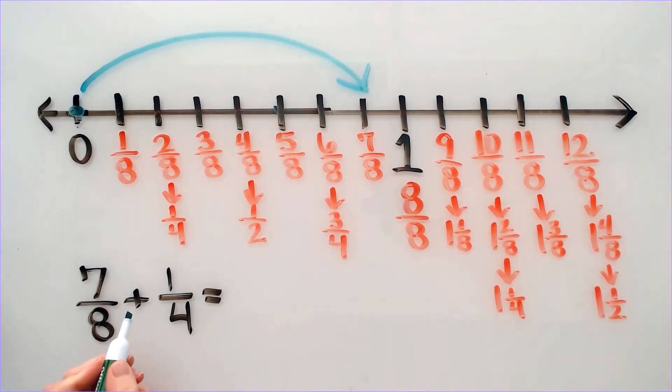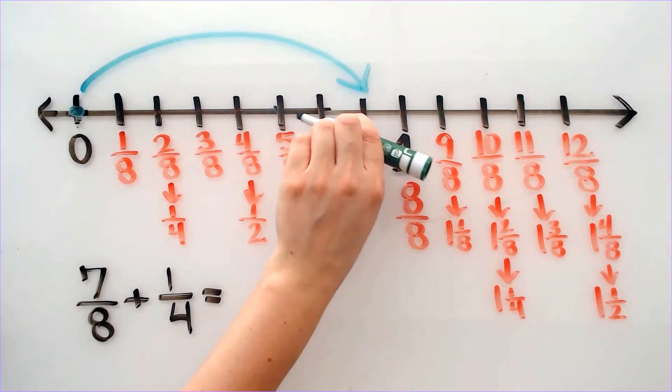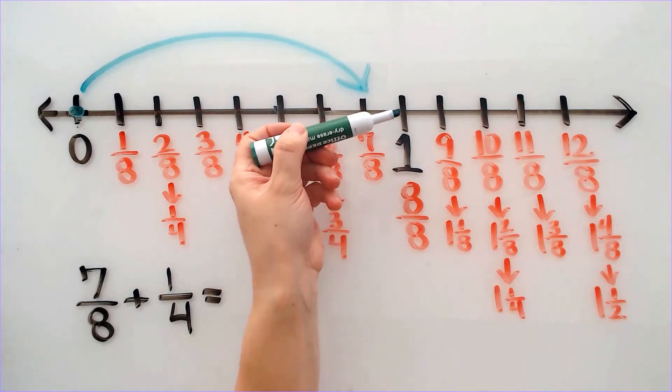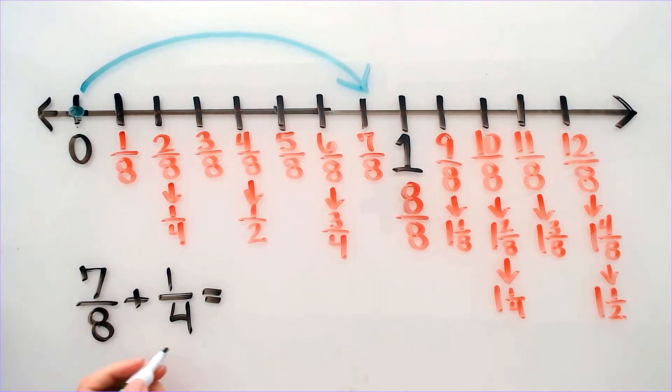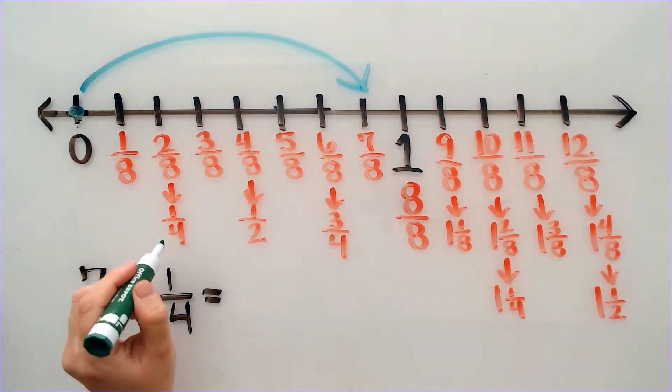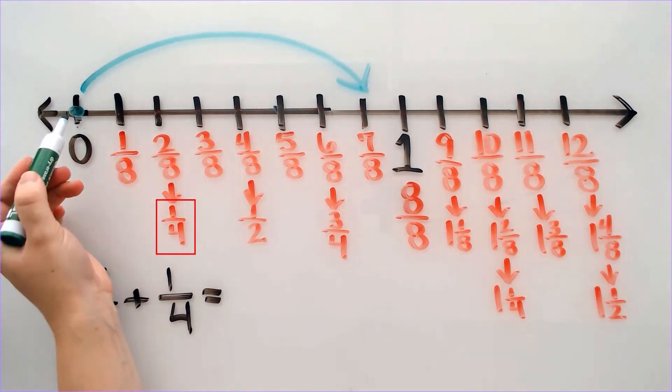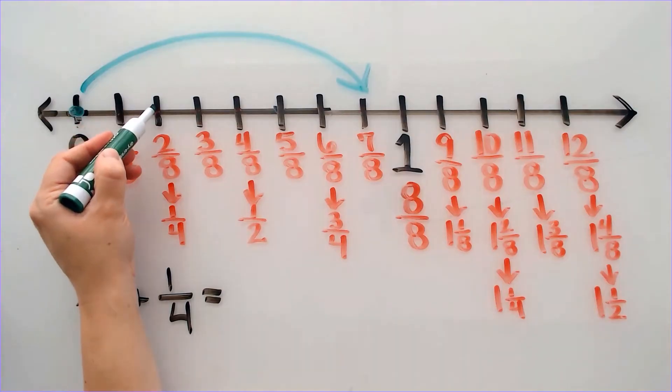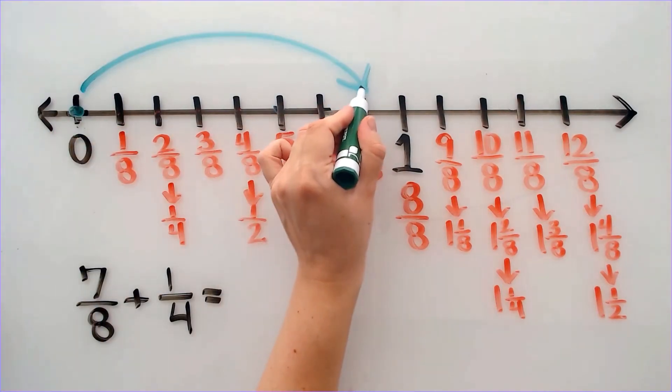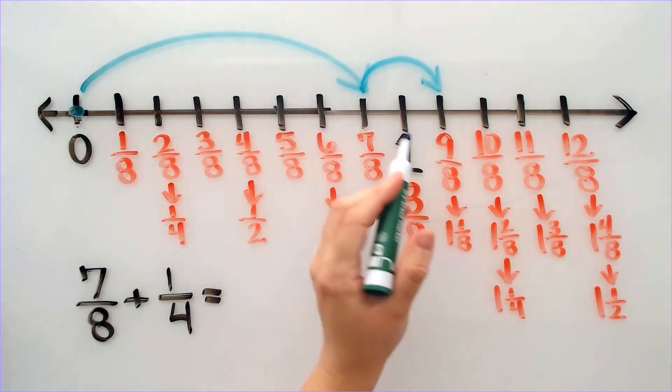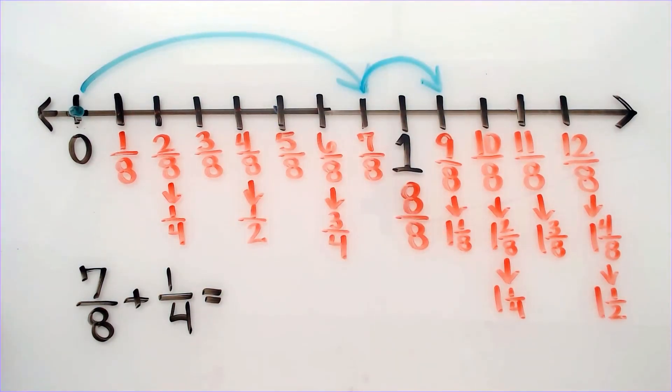Now, since it is an addition problem, I am not going back to the left because that is subtraction. So I am actually going to add to it by moving to the right. I need to add 1 fourth. Well, 1 fourth is the same as 2 over 8. So that means that I need to move 1, 2 spots from where I am at. So from 7 eighths, I go over 1, 2, and I am at 9 eighths.